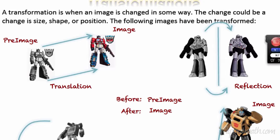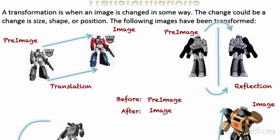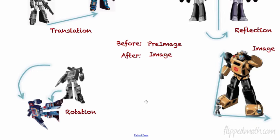The next type is called a reflection — when you flip an image over a line. Notice that everything flips backwards: if the gun is on the right hand before, after the flip it's on the left hand. Think of it as wet ink or paint: you fold the paper on the line and the ink transfers to the other side. The head is an equal distance from the line on both sides. The pre-image is before, and after you flip it, that's the image.